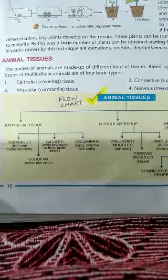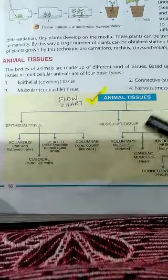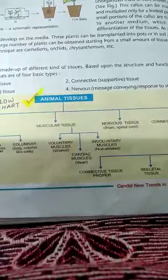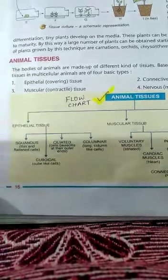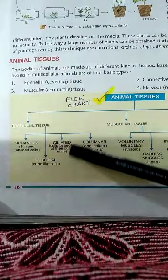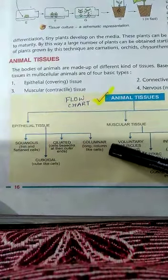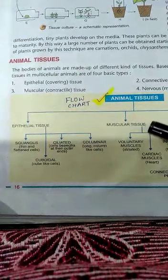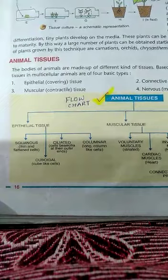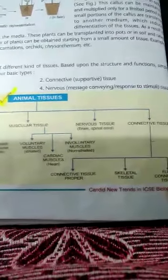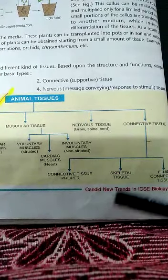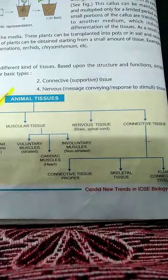Now there are four types of animal tissue: epithelial, muscular, nervous, and connective tissue. Epithelial tissue is classified into squamous, cuboidal, ciliated, and columnar. Muscular tissue is classified into voluntary muscles, cardiac muscles, and involuntary muscles. Connective tissue is classified into connective tissue proper, skeletal tissue, and fluid connective tissue.